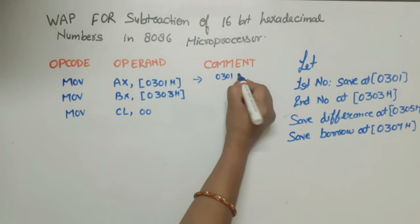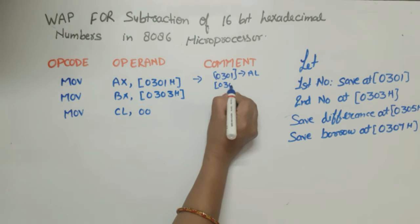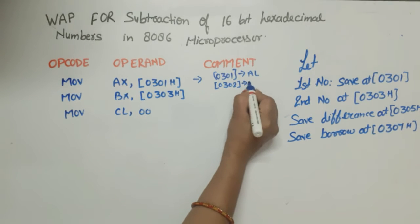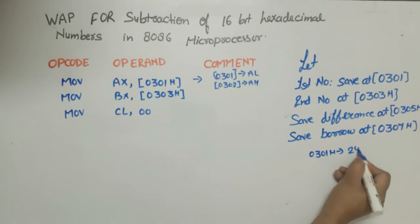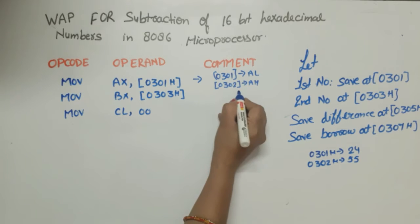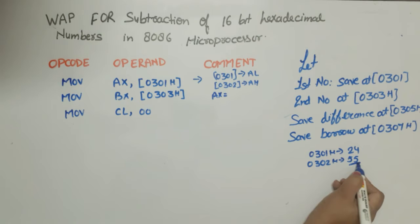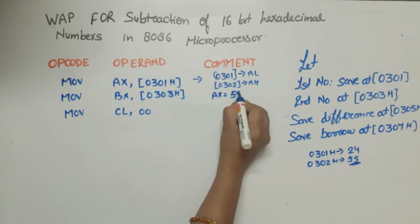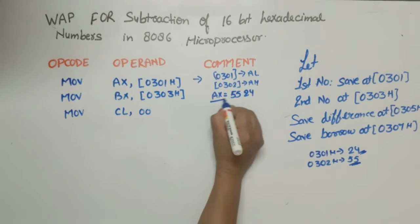0301h data will move in AL and 0302h data will move in AH. For example if 0301h data was 24 and 0302h data was 55, then after execution of this AX value is what will happen? This data will move in AH means 55, this data will move in AL means 24. This is the value of AX.